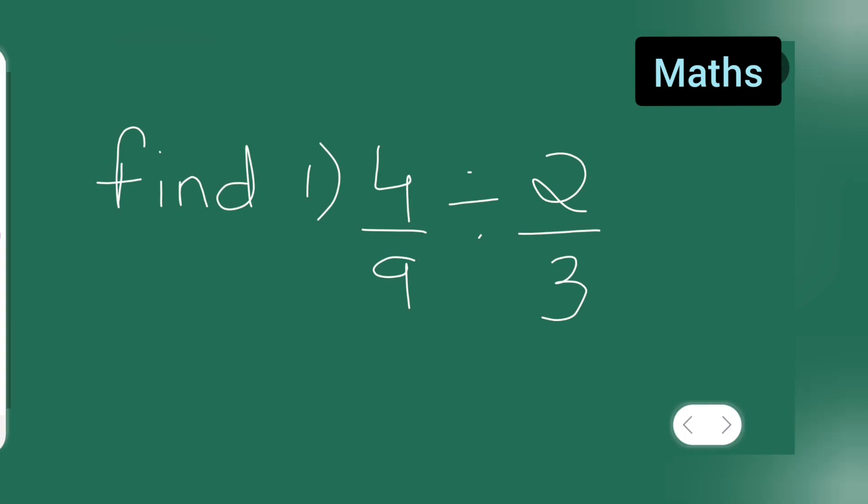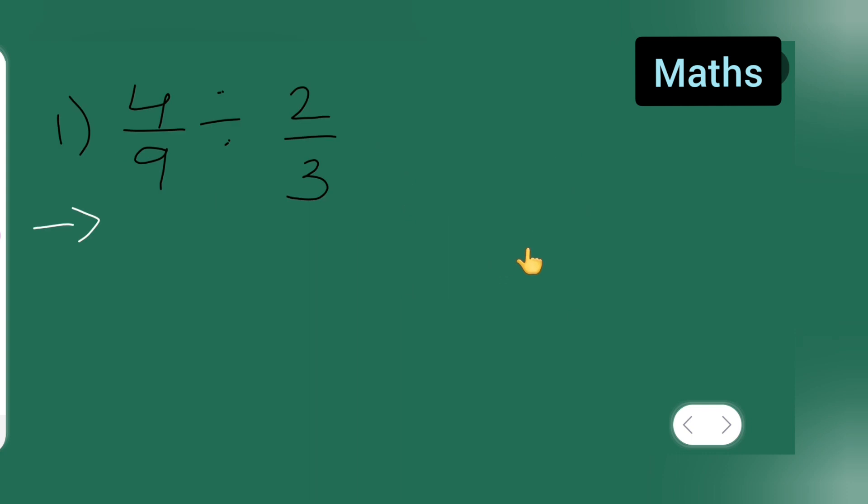So in today's class of mathematics, let us find or divide 4 upon 9 divided by 2 upon 3. So let us see how to divide this type of numbers. Let me turn the page.